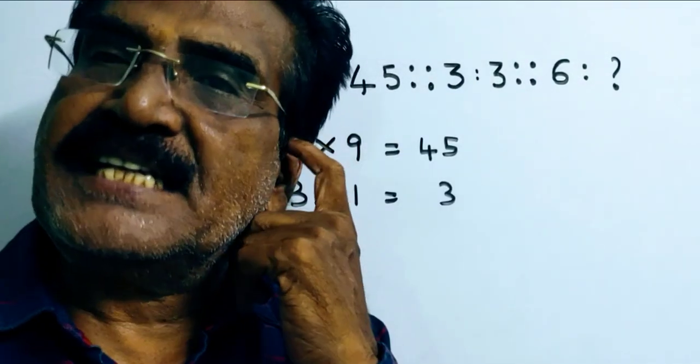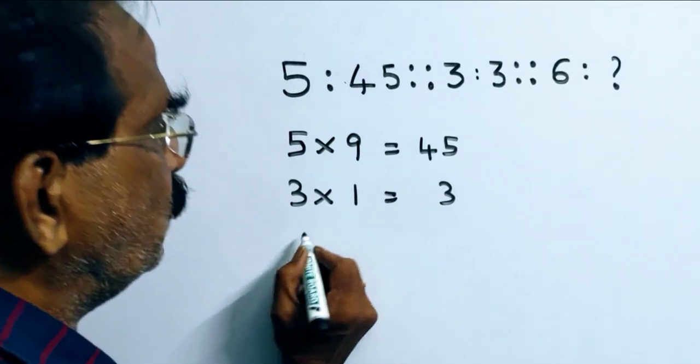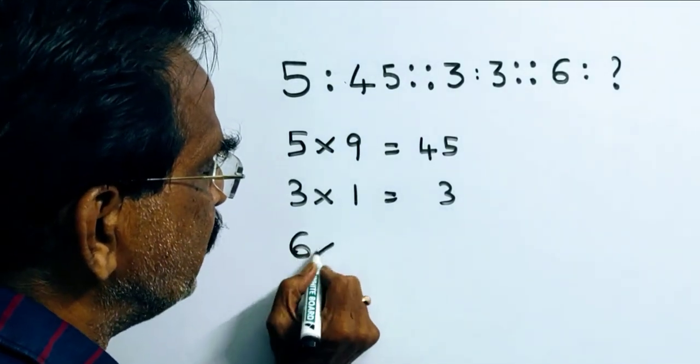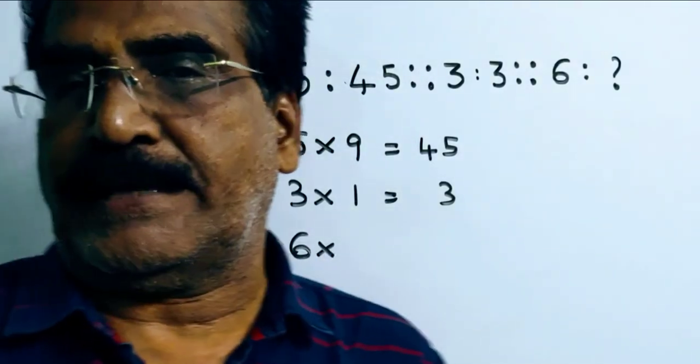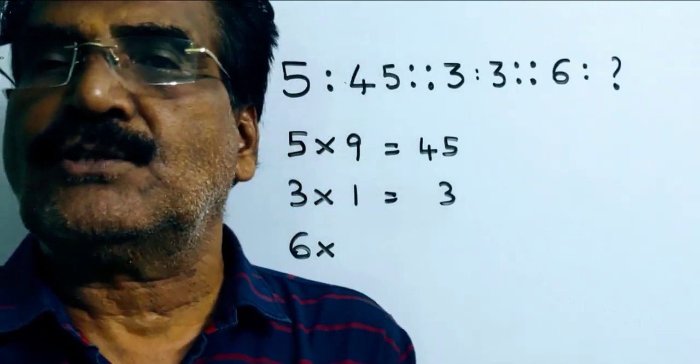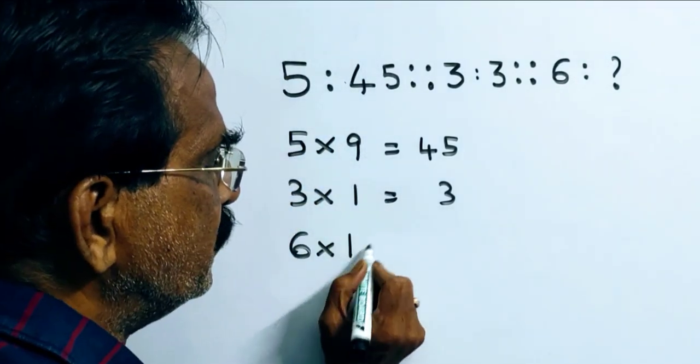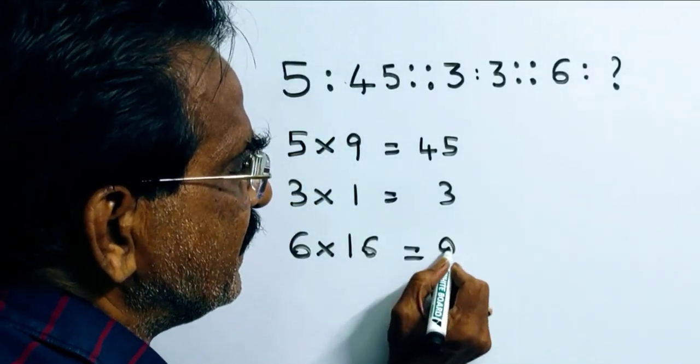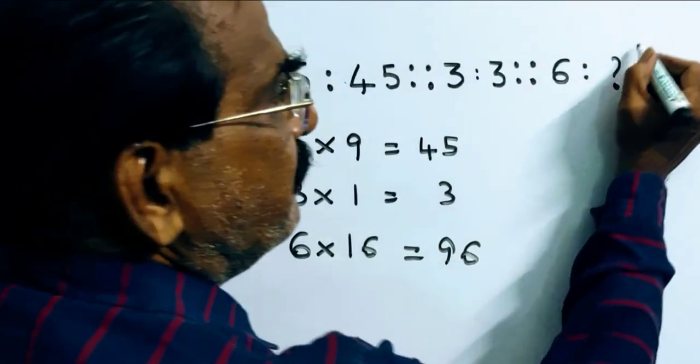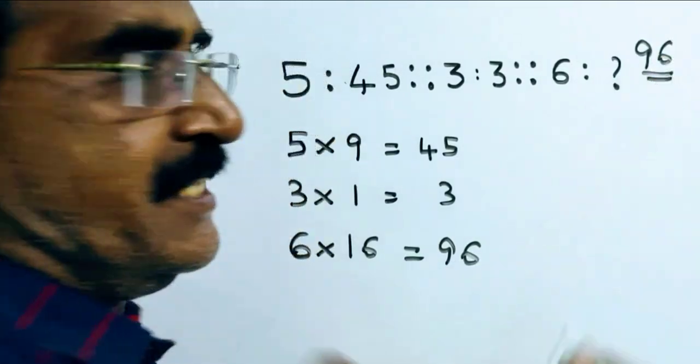In the same way, 6 is related to 6 into 6 minus 2 whole square. Friends, 6 minus 2, 4, 4 square, 16. So, 6 into 16, 96. So, the sixth number must be 96 friends. 96.